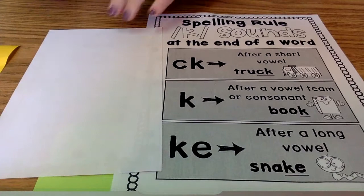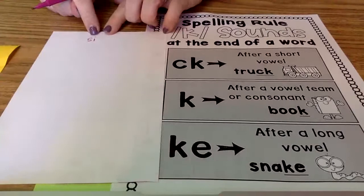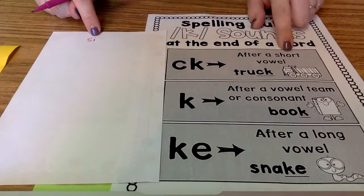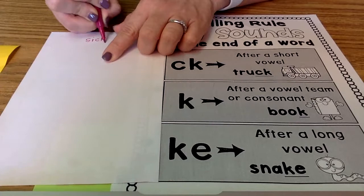S, I, okay, so I hear K at the end. What do I need to use? Well, S, I, I have a short vowel, so I need C-K. Sick. All right.